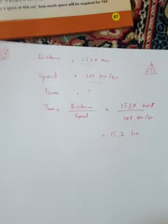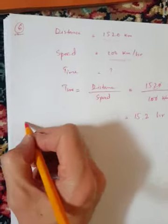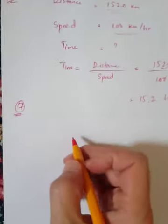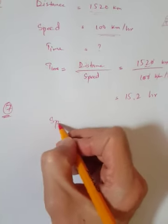Now let's solve question number seven. A car moves at the speed of 8,250 meters per second.